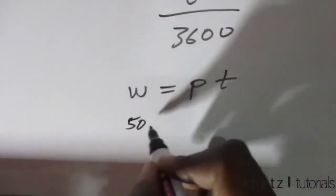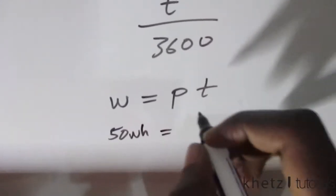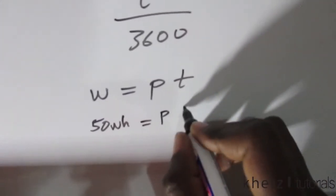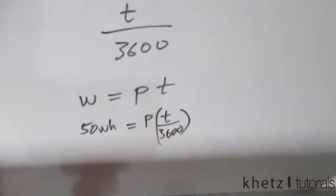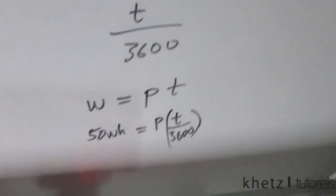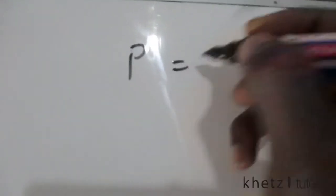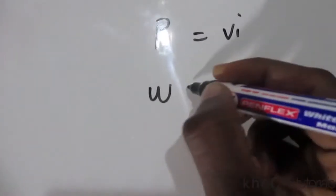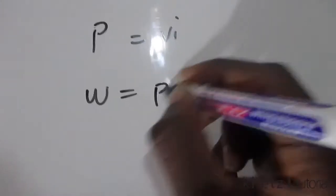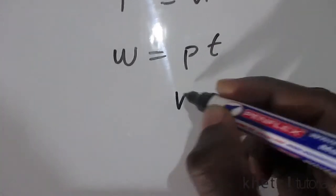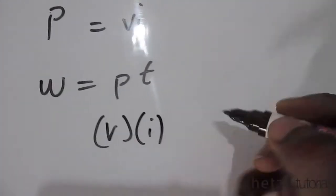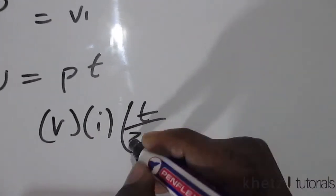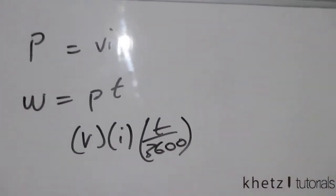So let's proceed as thus. 50 watt hours equals power multiplied by the time in seconds divided by that. Now we're going to do substitution here. We also know that P equals VI. So energy in watt hours equals Pt. Now writing everything: V multiplied by I multiplied by t over 3600 to give us the time in hours.